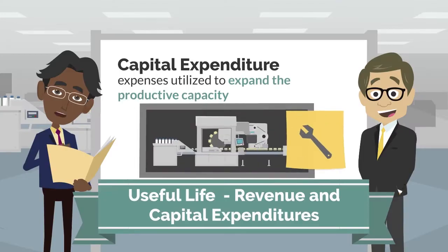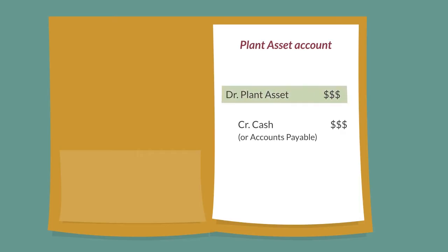Capital expenditures improve the asset's useful life, making the asset last longer. Because we substantially improve the asset, we debit the plant assets account and credit cash.